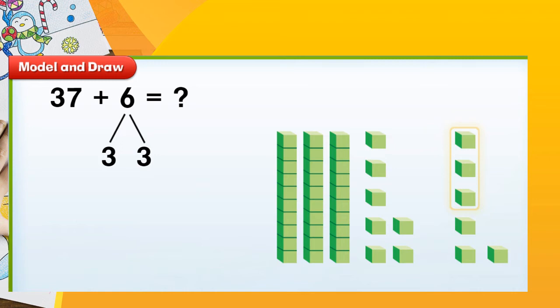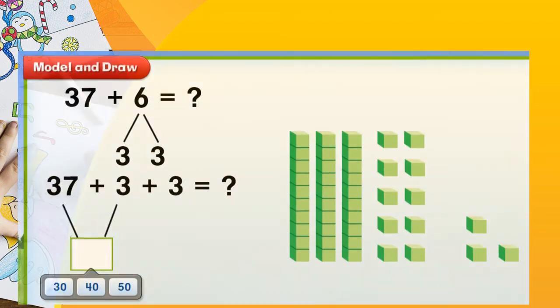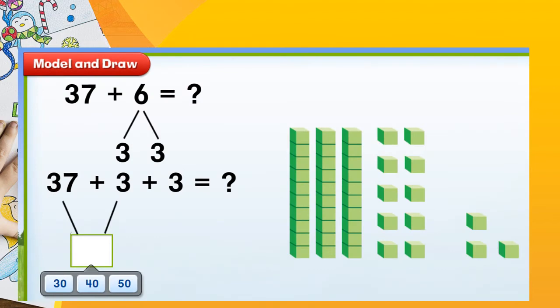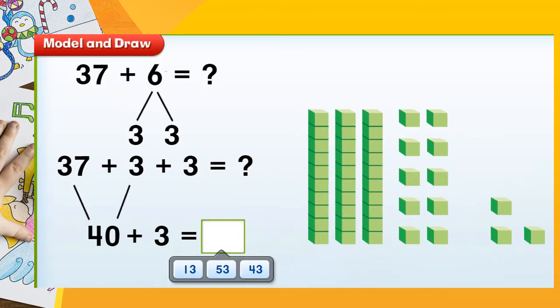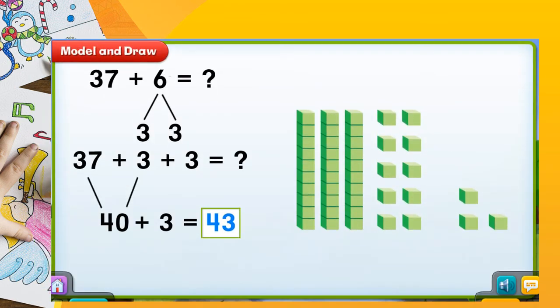Break apart 6 to get 3 ones. What is the number that was made? Select to show your answer. Very good. You all said 40. Now we need to finish adding, which is, what is the sum of 40 plus 3? Can you select your correct answer, children? Very good. It is 43.